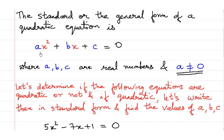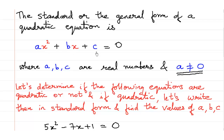A quadratic equation is an equation whose standard form or general form is ax² plus bx plus c is equal to 0, where x is the variable. Instead of x we can have y, z, p or q, but a, b and c are numbers. a cannot be equal to 0 but b and c can be 0. a could be positive or negative but not 0. b and c could be positive or negative.